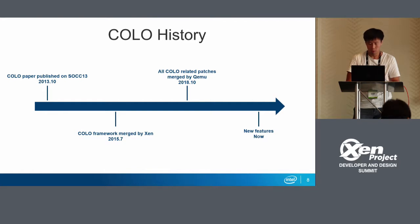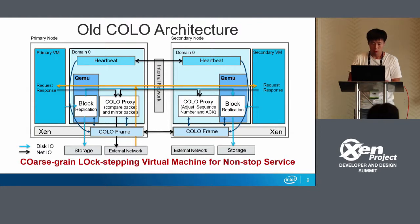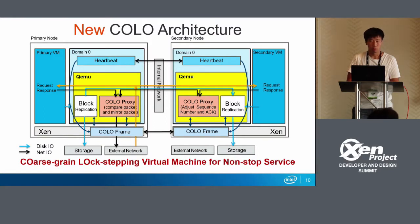Now we have some new features. That's the old COLO architecture. In this diagram, we can see COLO has three modules: COLO frame in Xen space, COLO proxy, and block replication. The old COLO architecture placed block replication in the QEMU space and COLO proxy in the Domain Zero kernel space. Comparing this with the new COLO architecture, we moved the COLO proxy from kernel space to user space. We have many advantages.